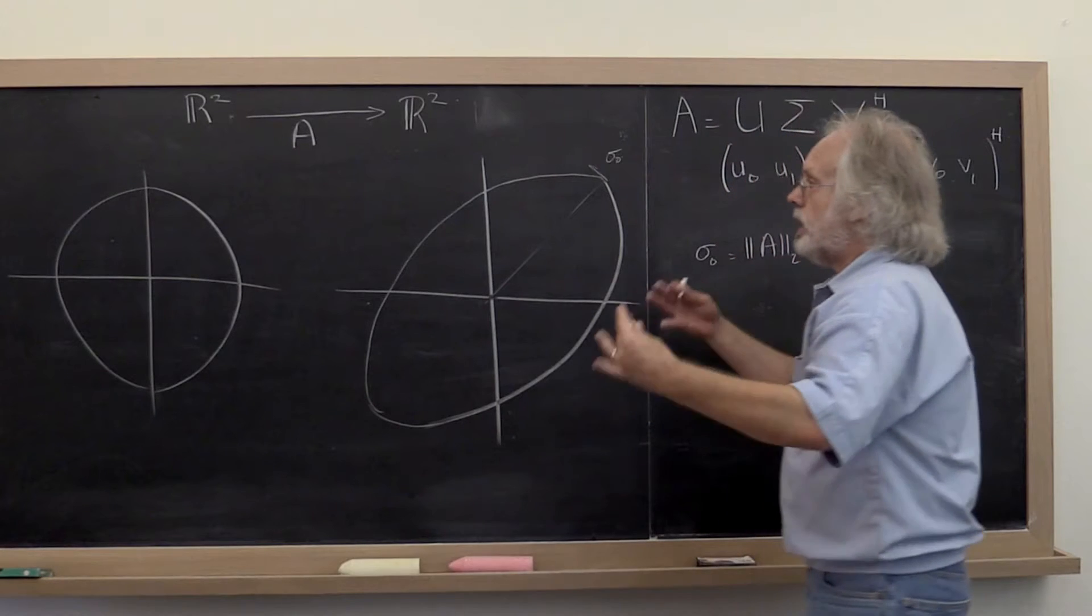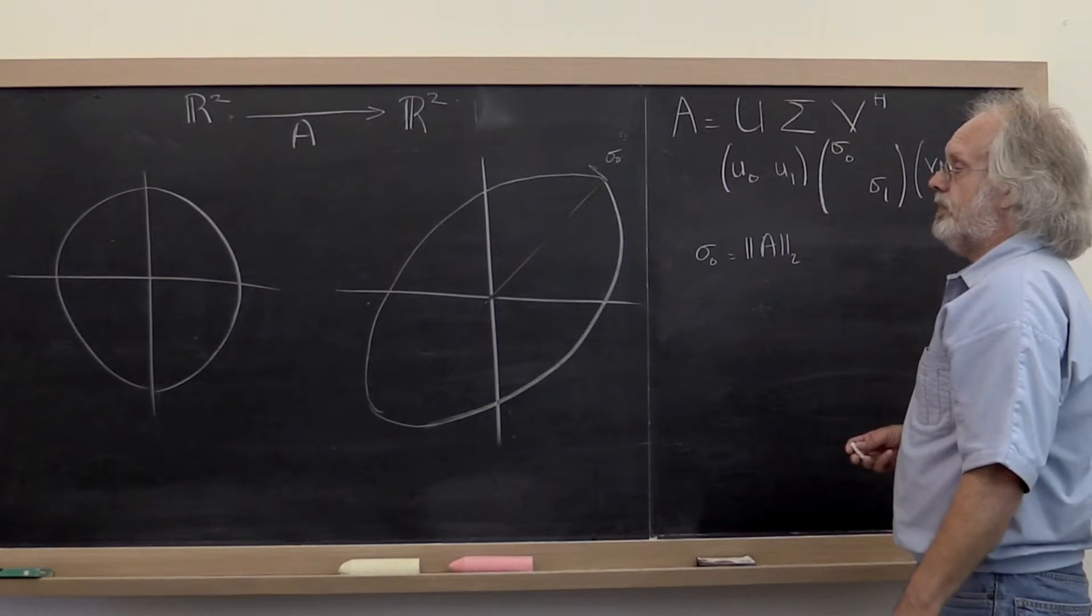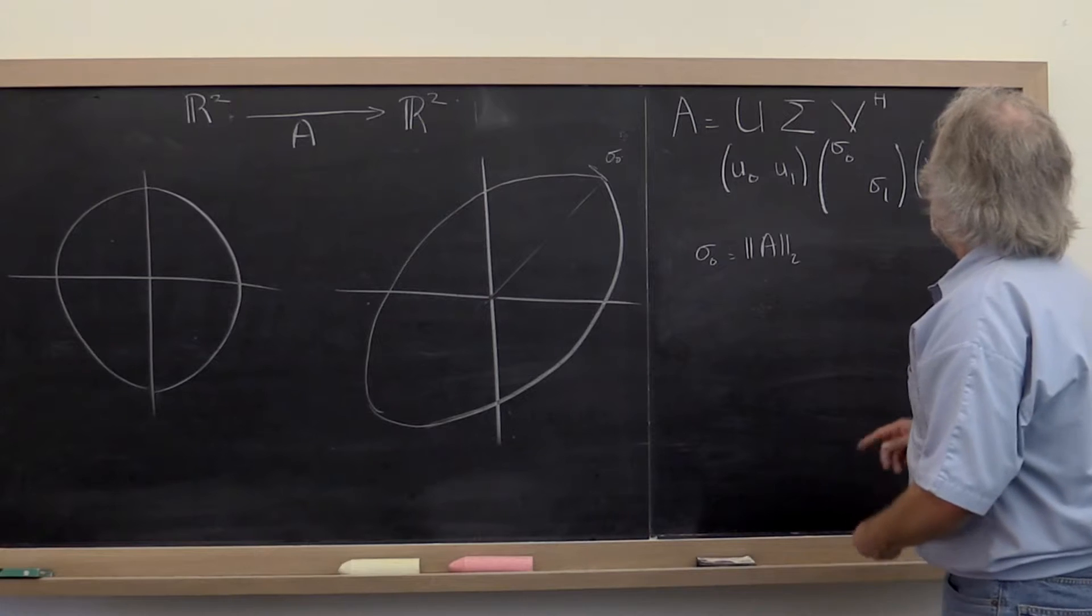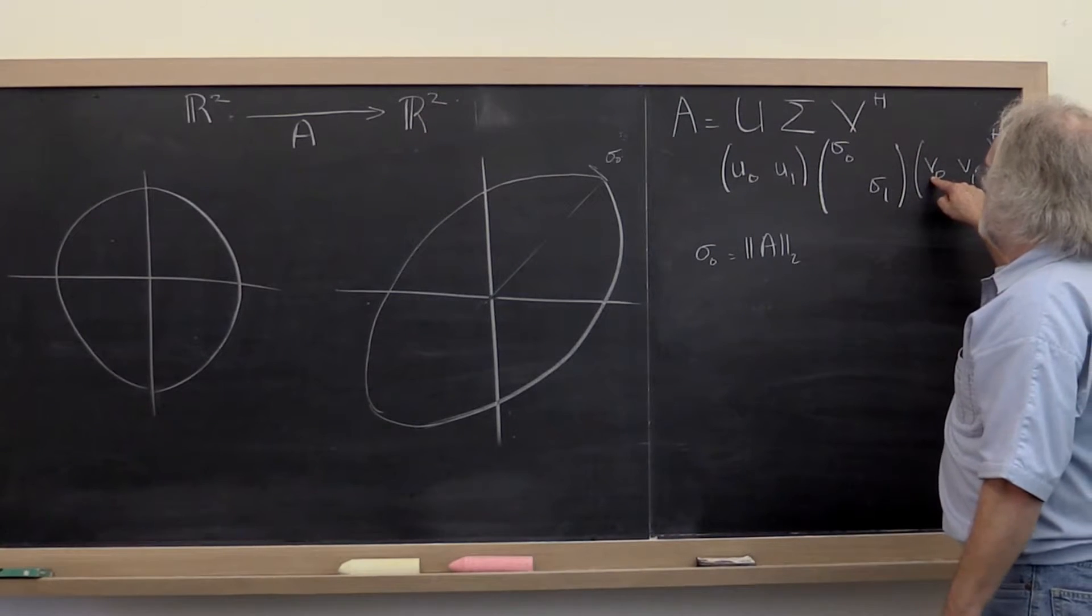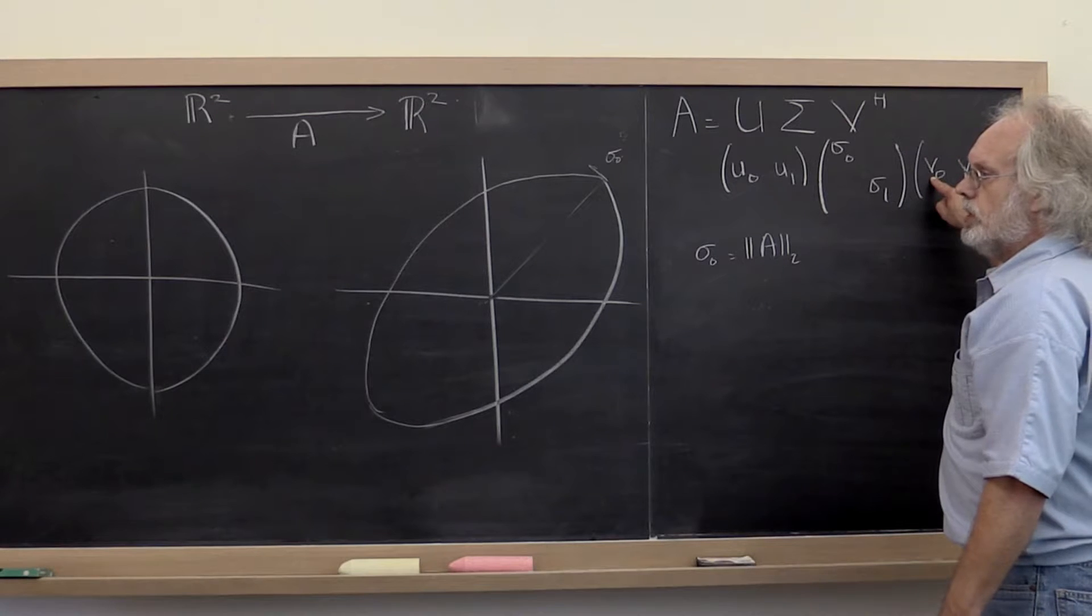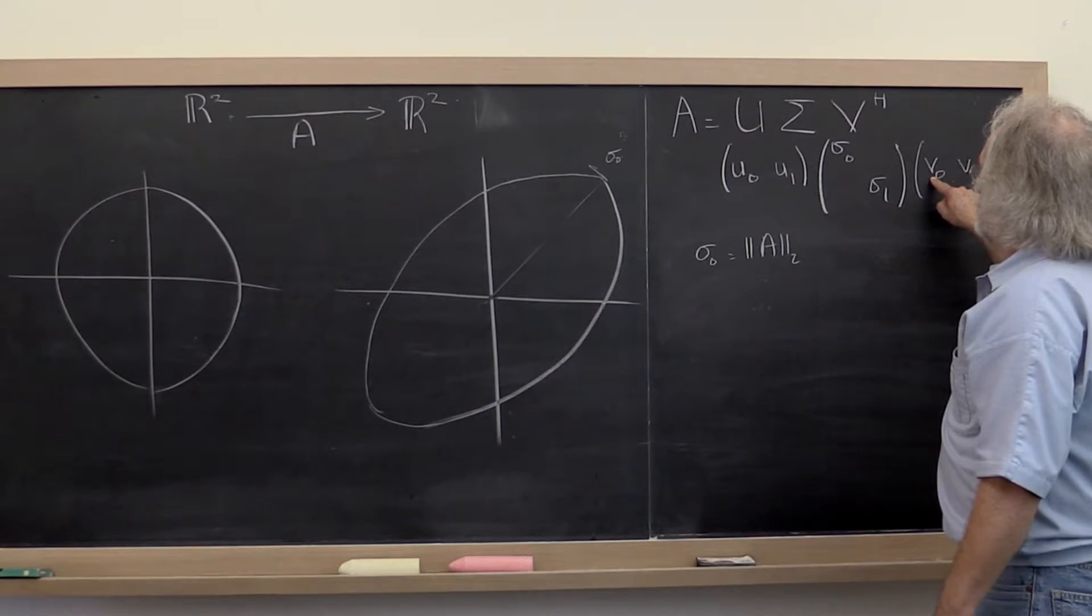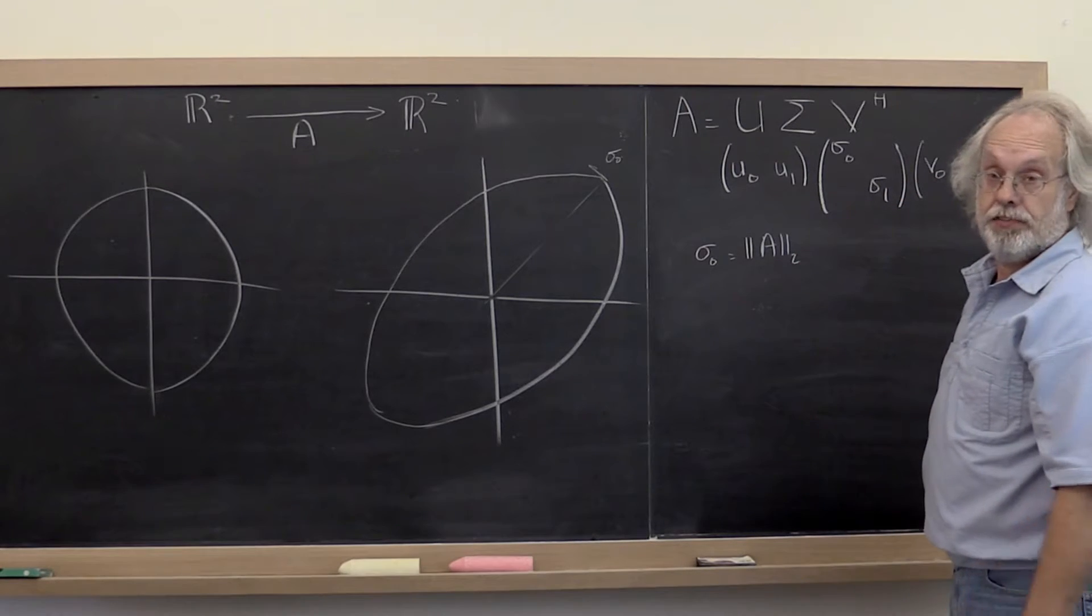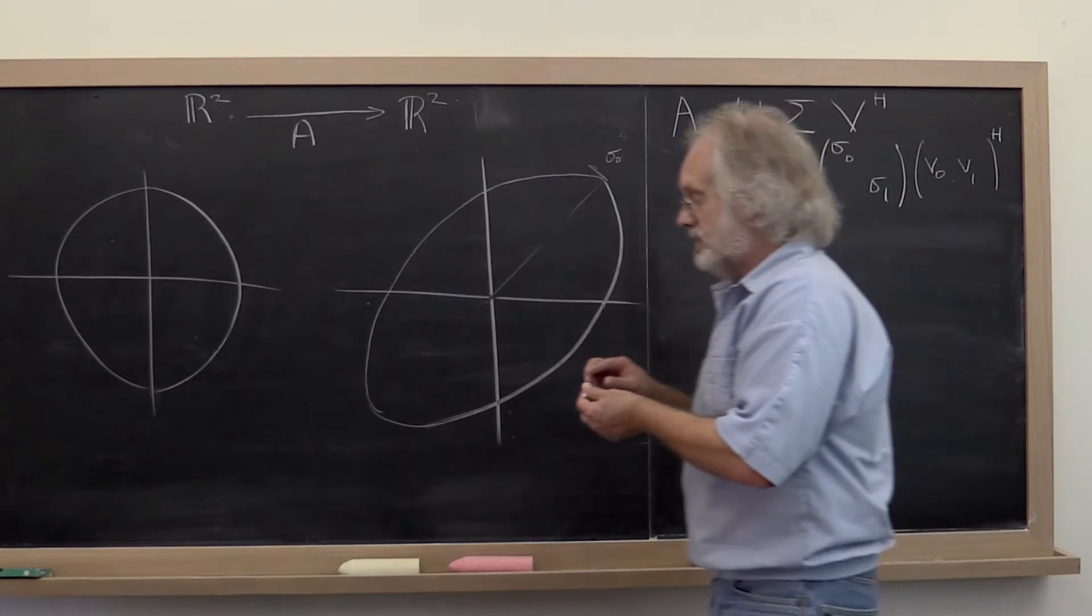Now in coming up with the singular value decomposition, what did we say? We said, let's pick V0 so that it's the unit length vector such that it achieves the maximum magnification. So what does that mean?